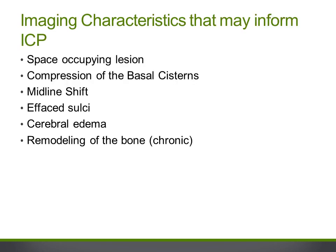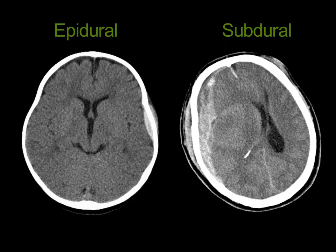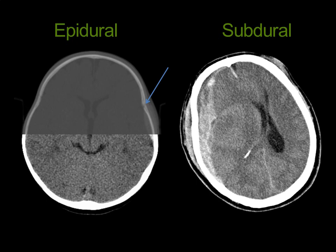Now let's look at some examples of imaging characteristics that could inform ICP. The image on the left shows a small left convexity epidural hematoma associated with a fracture through the left coronal suture, likely not significantly affecting ICP due to its small size. The image on the right shows a large right subdural hematoma with substantial midline shift, effacement of all the sulci, and compression of the lateral ventricles. Midline shift and extra-axial collection thickness of more than one centimeter, combined with assessment of the patient's clinical status, often trigger neurosurgical intervention.